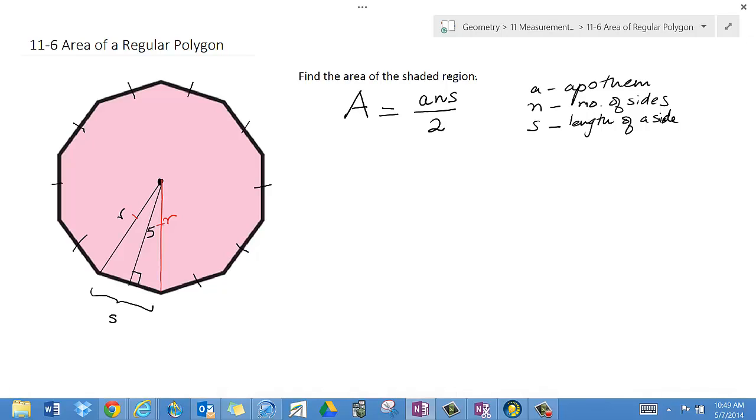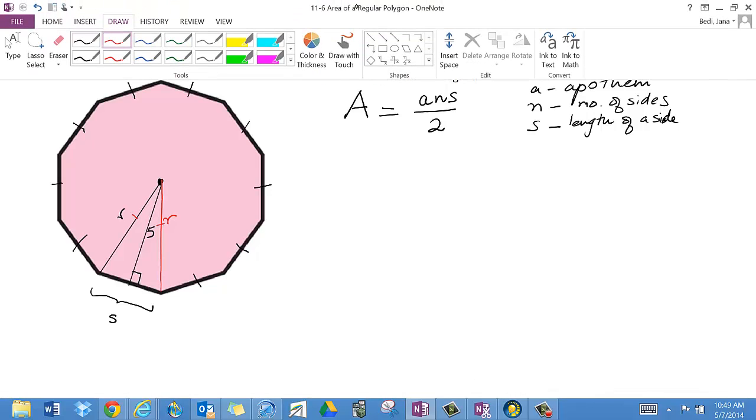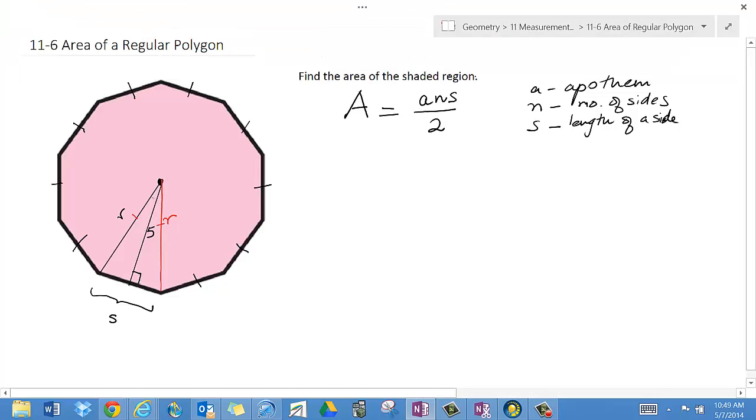I want to find S. Since I don't have two measures for this right triangle, I can't use the Pythagorean theorem. On the surface, there is no angle given. However, this is a regular polygon, so I can find the central angle, which is 360 degrees divided by the number of sides, which is 10. That's 36 degrees.